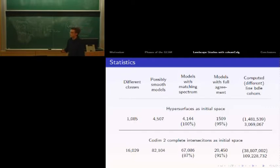As a fun fact, we computed 11 to 13 million line bundle cohomologies. For codimension 2 complete intersections in weighted projective spaces, we started with 16,029 models and calculated data for about 82,105 models total. We found agreement of 87% for the chiral spectrum. This is not 100%, so there are possible explanations. For instance, we might still have singularities in our base manifold.